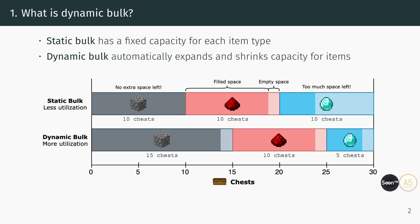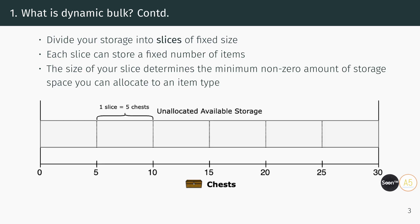In essence, a dynamic bulk storage system automatically adjusts capacity based on the quantity of items stored. Unlike static bulk systems, which have a fixed capacity that must be manually set for each item type, dynamic bulk systems determine the way storage capacity is organized on their own in order to maximize efficiency without human intervention.